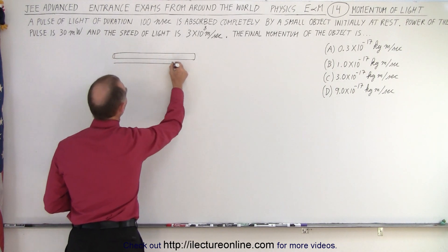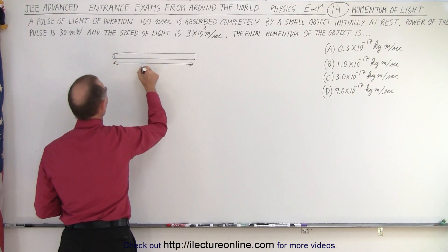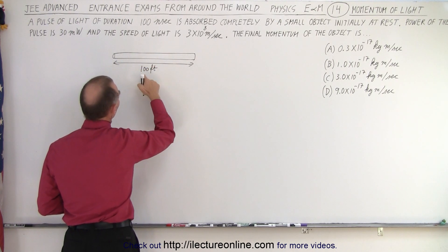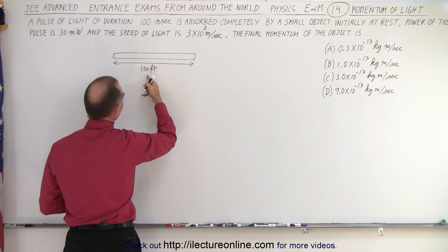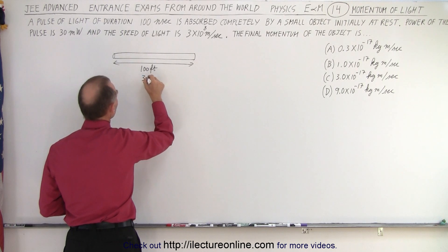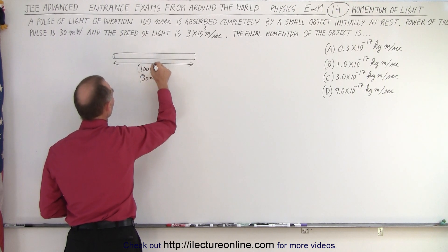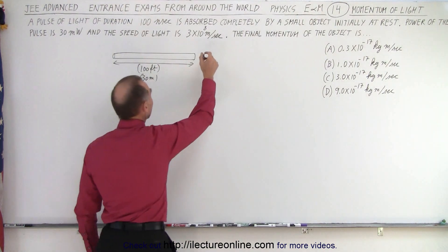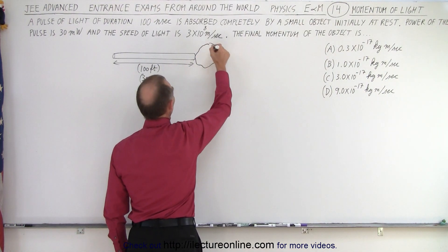So if we have a 100 nanosecond pulse, that means that this distance right here has to be 100 feet or converted to meters, 30 meters. So the pulse of light about 30 meters long or 100 feet long travels along and hits an object which is at rest.